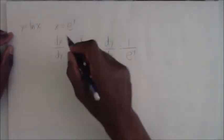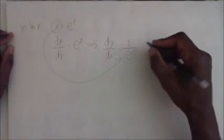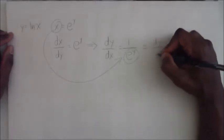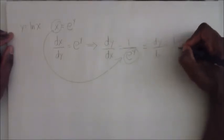So I can substitute that right in here. And so we now know that the derivative of y with respect to x is equal to one over x.